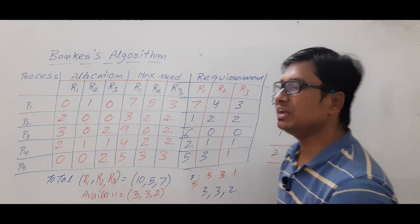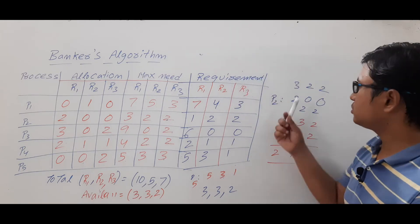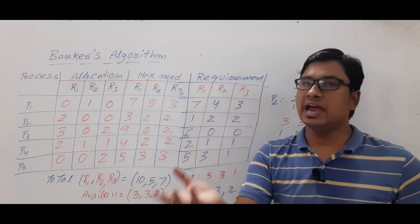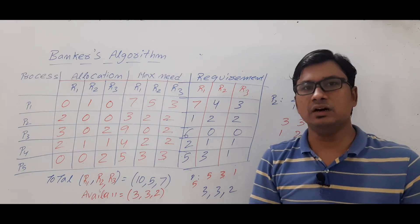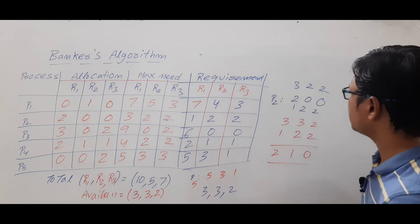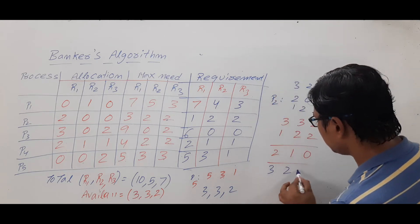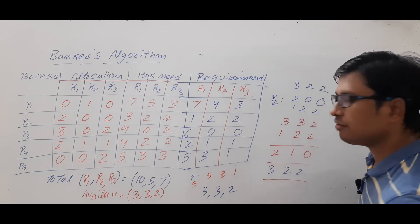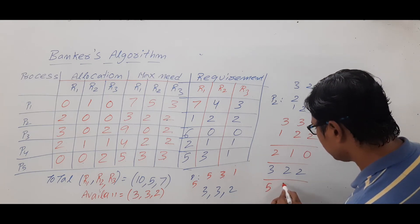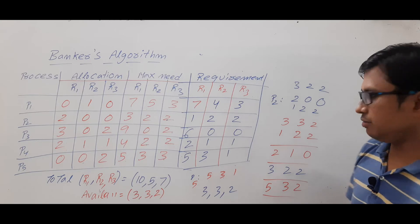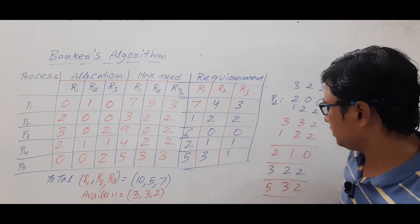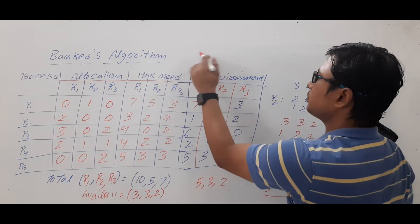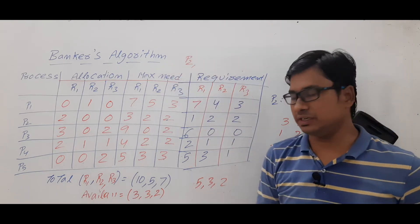Once P2 completes its task, it releases all its resources — 3, 2, 2. Adding those to the current availability of 2, 1, 0, the new availability becomes 5, 3, 2. Process P2 is now complete. We record P2 as the first process in our safe sequence.